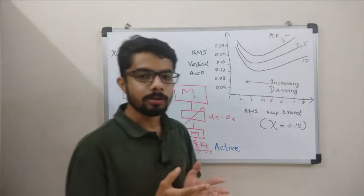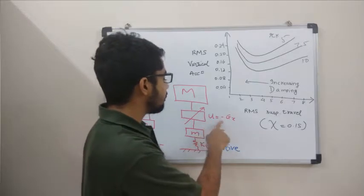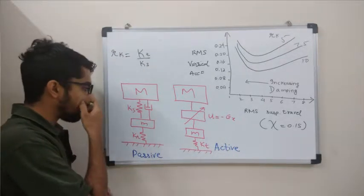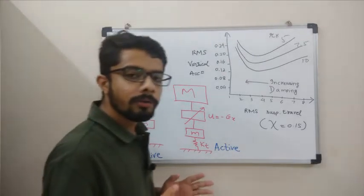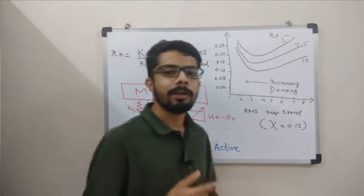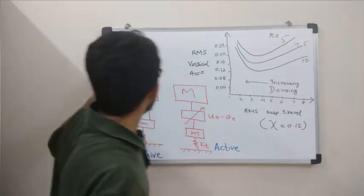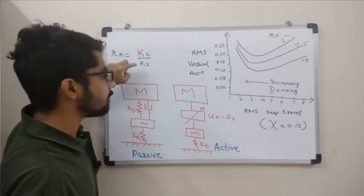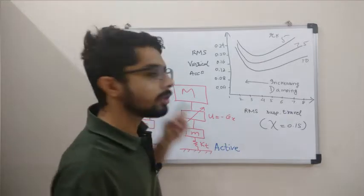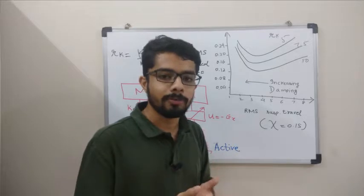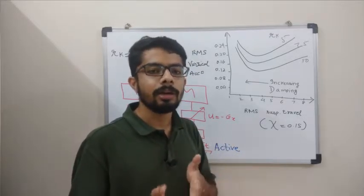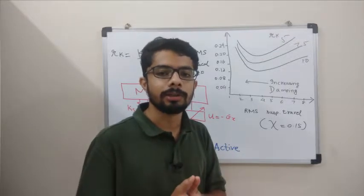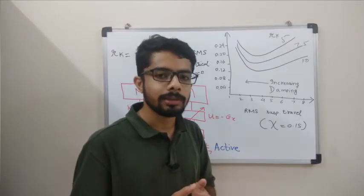The active suspension uses a transfer function that controls the entire suspension system, whereas passive suspension uses the traditional spring and damper. In this video, we are only going to talk about the passive suspension system; active suspension will be covered in the next video. The stiffness ratio is the ratio of tire stiffness to suspension stiffness. If the stiffness ratio is around 5, it is more suited for high performance cars, whereas for luxury cars where passenger comfort is a priority, a stiffness ratio of around 20 is taken into consideration.